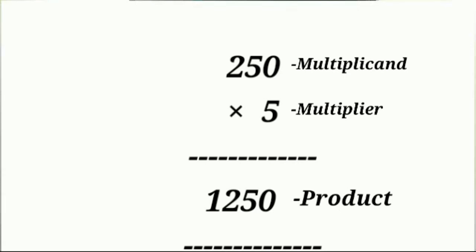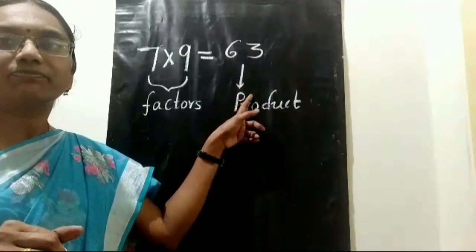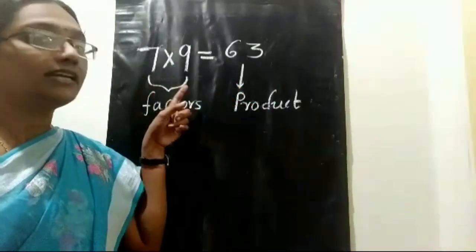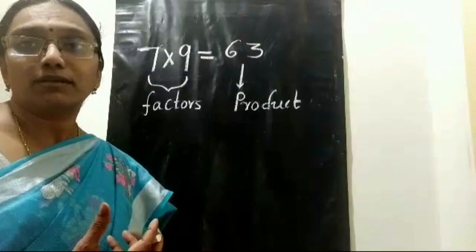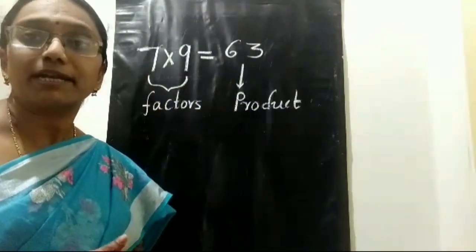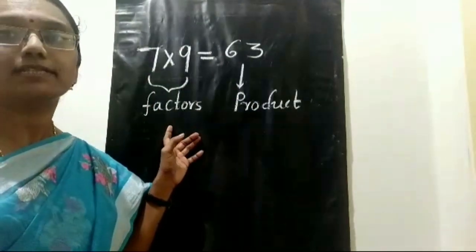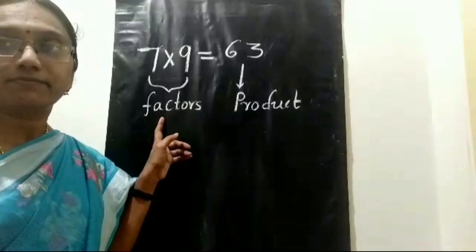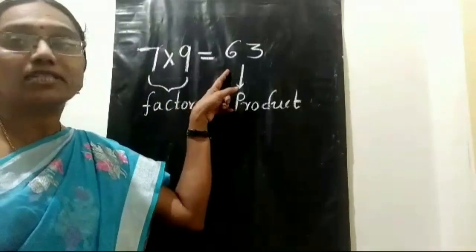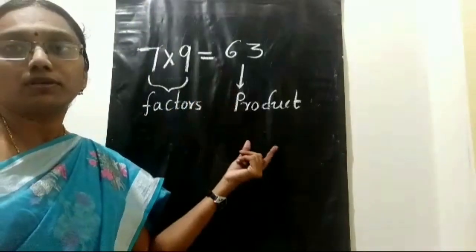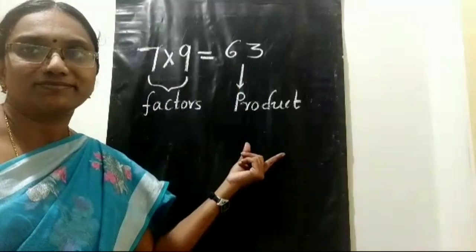The answer in multiplication is called the product. We are good at tables from 1 to 9. See this example: 7 into 9 is 63. Here 7 and 9 are called multiplicand and multiplier, and they are also called factors. The number 63, the answer, is called the product.